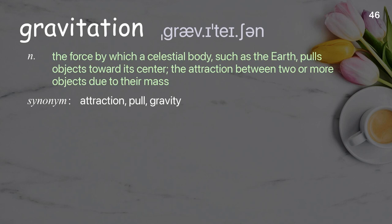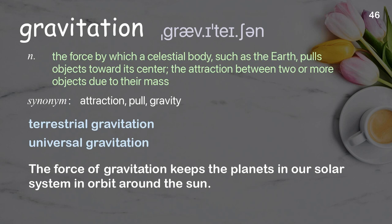Gravitation. The force by which a celestial body, such as the earth, pulls objects toward its center; the attraction between two or more objects due to their mass. Examples: terrestrial gravitation, universal gravitation. The force of gravitation keeps the planets in our solar system in orbit around the sun.